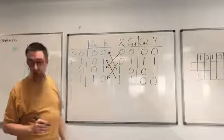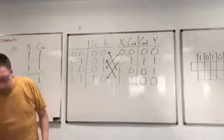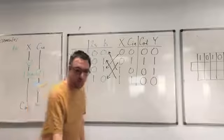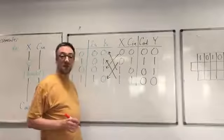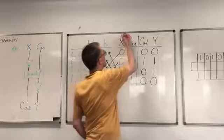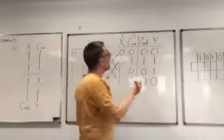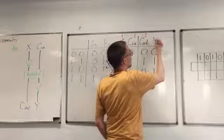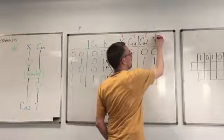So we've built the truth table for Desmond's decrementor. We're advised to regard it as a funny kind of adding machine where the inputs and outputs have slightly unusual place values. In particular, x has place value 1, the carry-in has place value minus 1, the carry-out has place value minus 2, and the y output has place value 1.